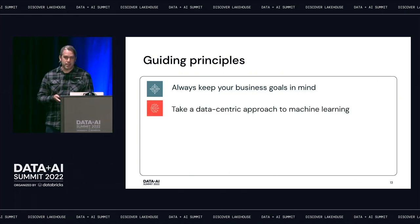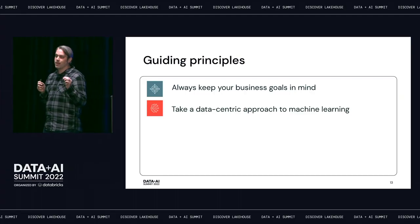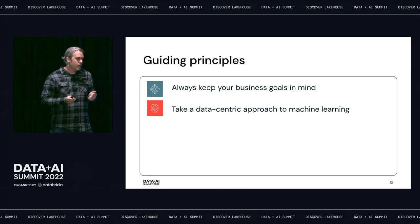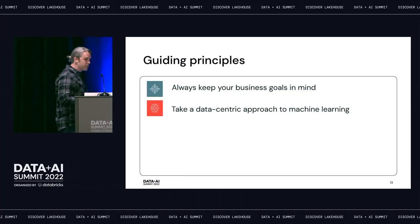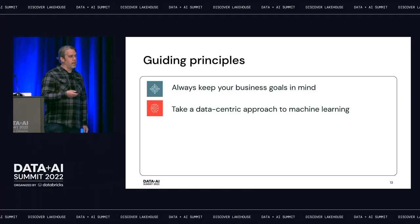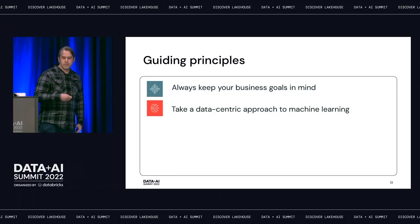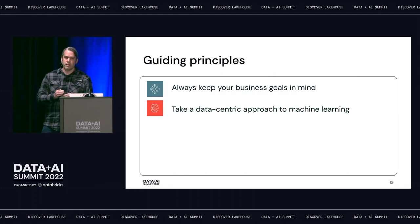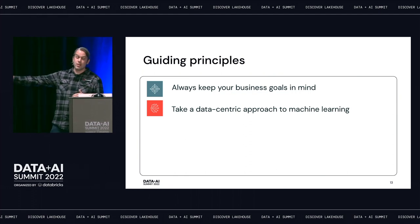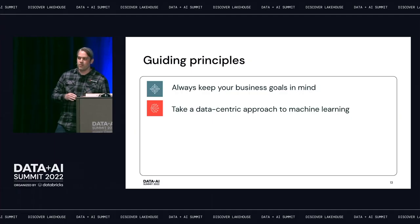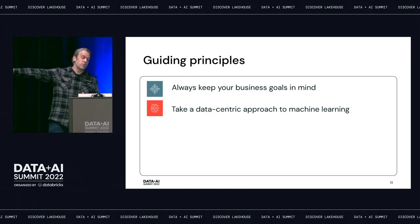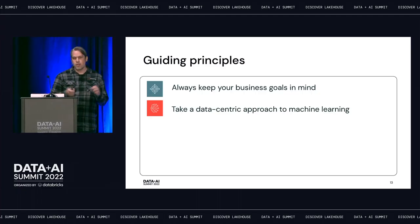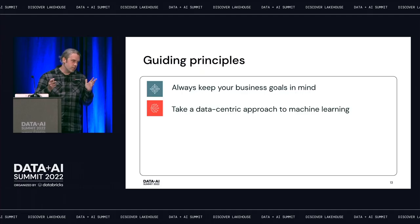Second, take a data-centric approach to machine learning. ML pipelines are data pipelines and need to be as robust as any other data engineering process. Data quality is absolutely critical in machine learning pipelines, so take a systematic approach to monitoring and ensuring data quality. Also avoid choosing tools that make it hard to join your ML data — predictions, monitoring metrics — with the rest of your data. Choosing a data-centric ML platform simplifies that.